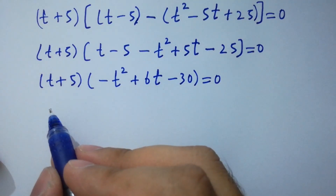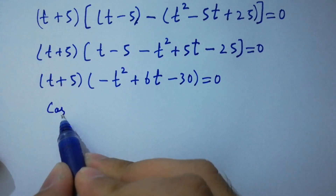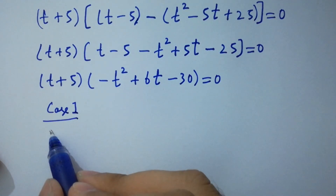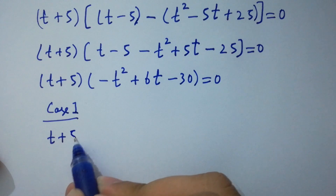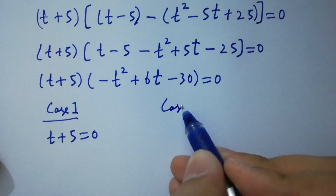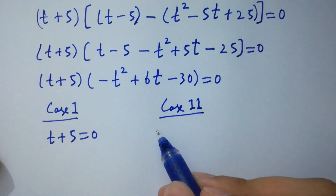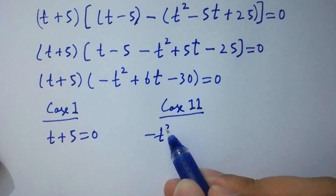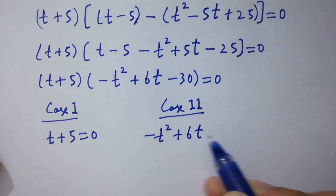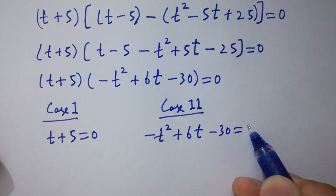So we have two cases here. Case 1: t plus 5 equals 0. Case 2: minus t squared plus 6t minus 30 equals 0.